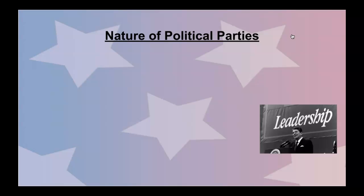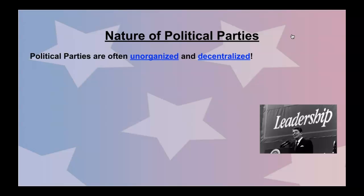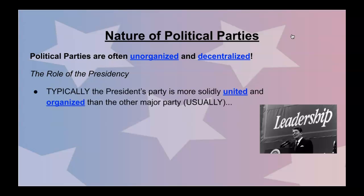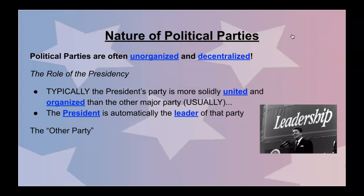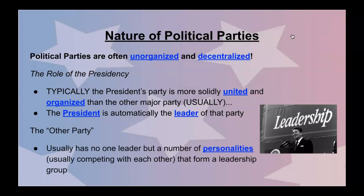Let's look at the nature of political parties — what do these people actually do? Political parties are often unorganized and decentralized, which might come as a surprise. However, they serve many different purposes and functions across all forms of government. Starting with the presidency: the president's party is typically more solidly united and organized than the other major party. For example, when Donald Trump came to Washington DC, Republicans realized they could grapple onto his popularity and form a majority across forms of government. So the president is automatically the leader of that party. The other party, the minority, usually has not just one leader but a number of competing personalities that form a leadership group defining the narrative for the country.